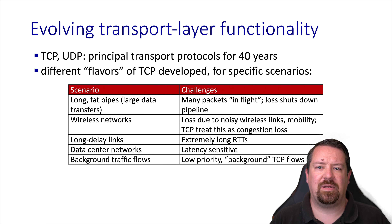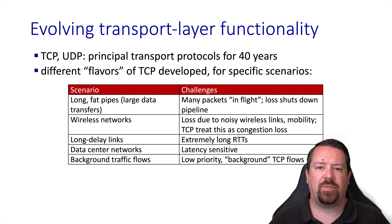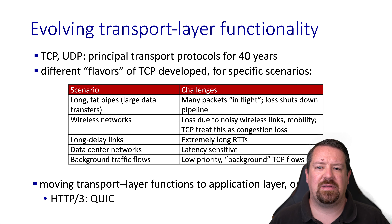There have also been developments for long delay links, such as satellite links. Data center networks introduce a number of challenges which were not anticipated in the early days of the internet, as do the idea of low priority background flows. Those have all been addressed by TCP variants, but recently we've also seen the latest version of the HTTP protocol moving to reimplement some of the features of TCP on top of UDP. This is known as the QUIC protocol.